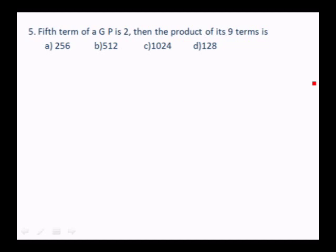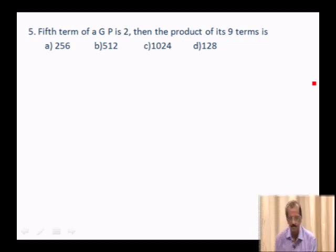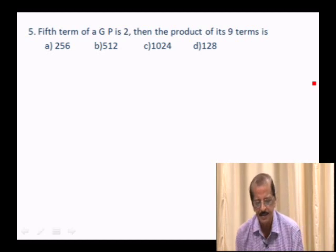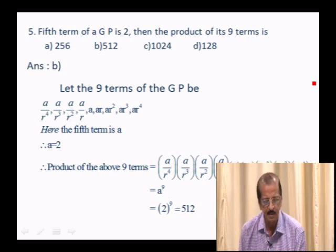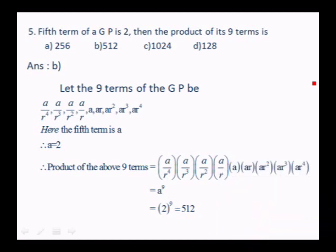GP Question 5: The fifth term of a GP is 2. Find the product of its 9 terms. Take the 9 terms symmetrically about the 5th: a/r⁴, a/r³, a/r², a/r, a, ar, ar², ar³, ar⁴. Their product = a⁹. Since the 5th term a = 2, the product = 2⁹ = 512. Answer: option B.